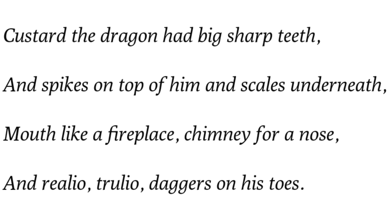In this part, the physical features of Custard the Dragon are described. He had big sharp teeth, spikes on his head, scales on his chest. His mouth was like a fireplace, his nose looked like a chimney breathing out smoke, and there were really daggers on his toes — his toe nails were very sharp like daggers. We can see the dragon had a terrifying appearance, but the world called him a coward. Intelligent and talented people who speak less are often underestimated, and the dragon is their symbol.